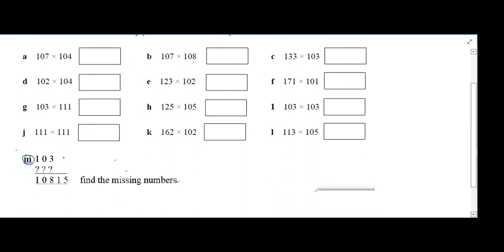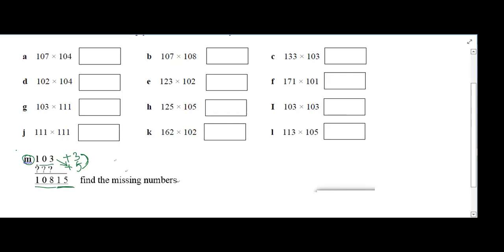Above base numbers example: base 100, extra number is 5. Product is 3 into 5 giving 15. Crosswise: 103 plus 5 gives 108. Overall answer matches. The missing number is 105.